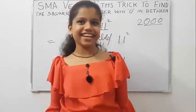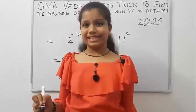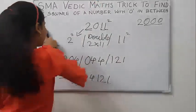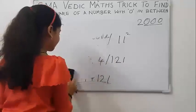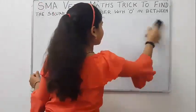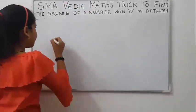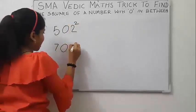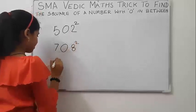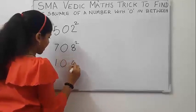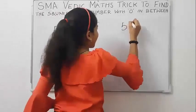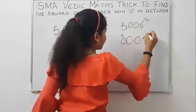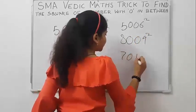Wasn't that an easy trick? Now I will give you some practice questions. After practicing those questions, try to do them in your mind. 502 square, 708 square, 104 square, 5006 square, 8009 square, 7013 square.